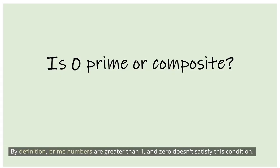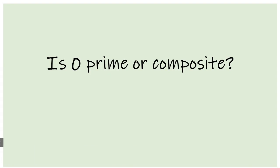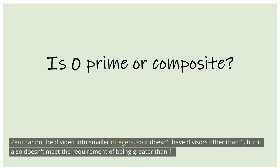By definition, prime numbers are greater than 1, and 0 doesn't satisfy this condition. 0 cannot be divided into smaller integers, so it doesn't have divisors other than 1, but it also doesn't meet the requirement of being greater than 1.